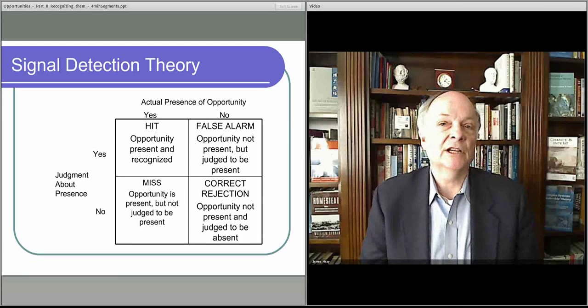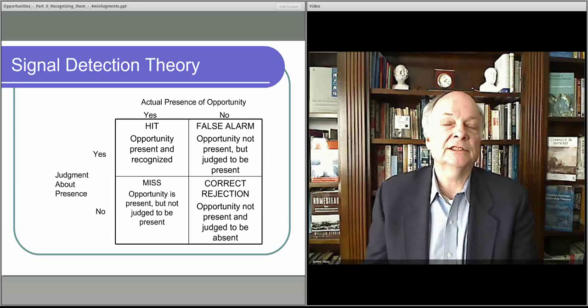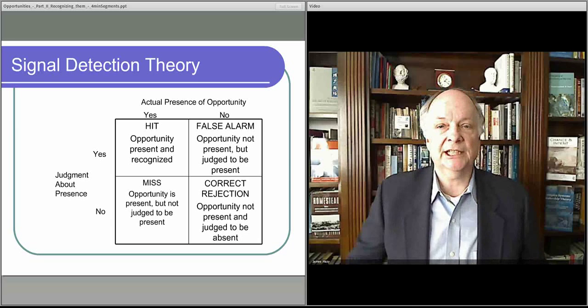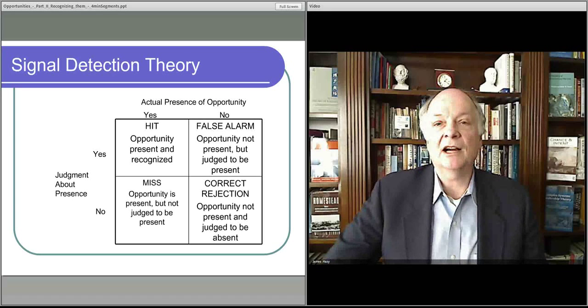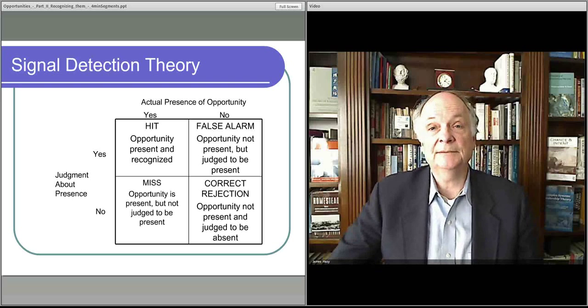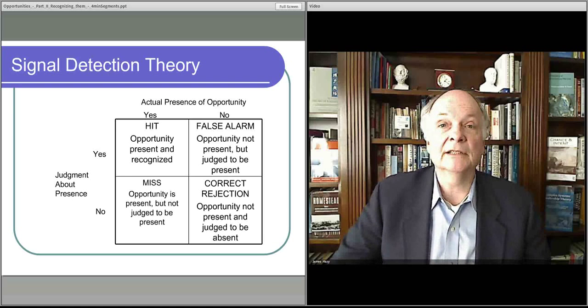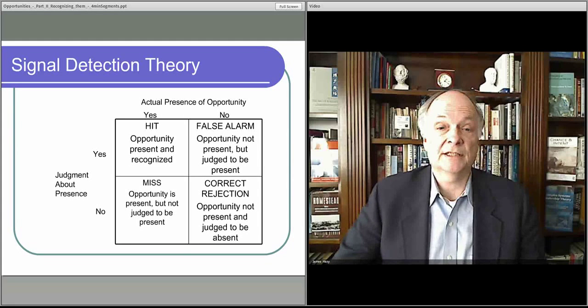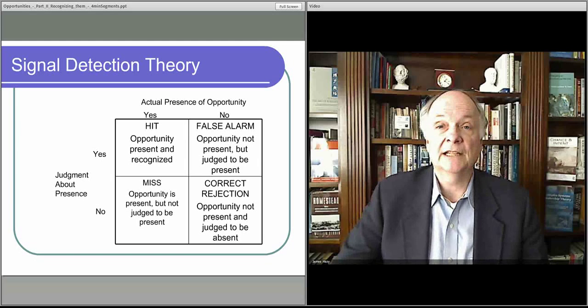The opposite is there is no opportunity and you don't see an opportunity. So that's a correct rejection. We don't even have to talk about those because if you don't see it and it's not really there, it doesn't matter. There's no opportunity present. That's the bottom right-hand corner.